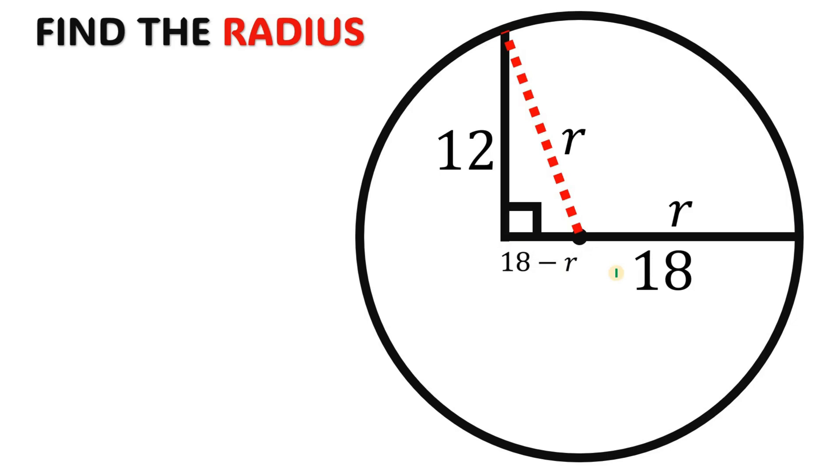And now using this right triangle, we can now solve for the value of r. So using the Pythagorean theorem, a squared plus b squared equals c squared, wherein our a is 12.